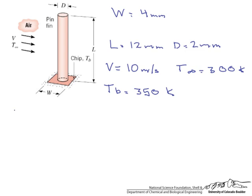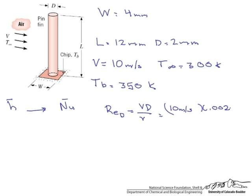It is an average one and in order to do that we are going to have to use a Nusselt number correlation. As you know all the Nusselt number correlations are a function of the Reynolds number as well as the Prandtl number. So let's calculate this Reynolds number. The velocity is 10 meters per second times 0.002 meters.